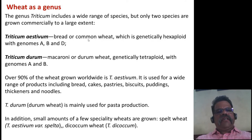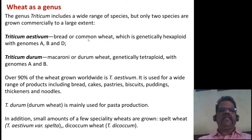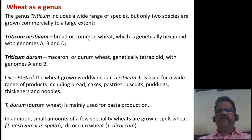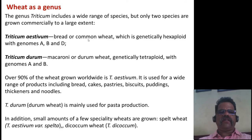The Triticum genus includes a wide range of species, but only two are grown commercially to a large extent. Triticum aestivum, commonly known as common wheat or bread wheat, is generally hexaploid and contains A, B, and D genomes. Triticum durum, or macaroni and durum wheat, is tetraploid and contains A and B genomes. Over 90% of wheat grown worldwide is Triticum aestivum, used for a wide range of products including bread, cake, pastries, biscuits, pudding, thickener, and noodles.